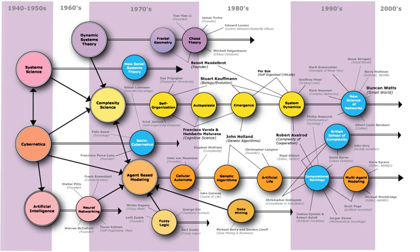Social complexity concepts such as complex systems, non-linear interconnection among macro- and micro-processes, and emergence have entered the vocabulary of computational sociology. A practical and well-known example is the construction of a computational model in the form of an artificial society, by which researchers can analyze the structure of a social system.